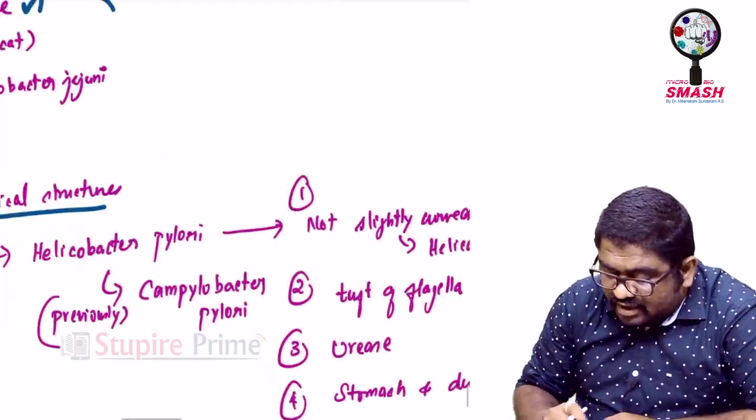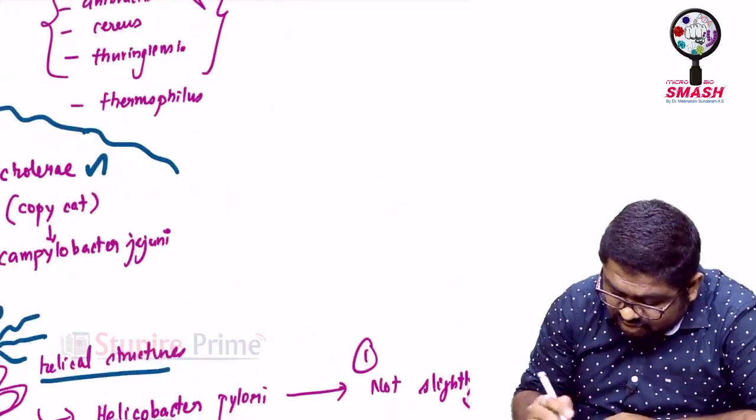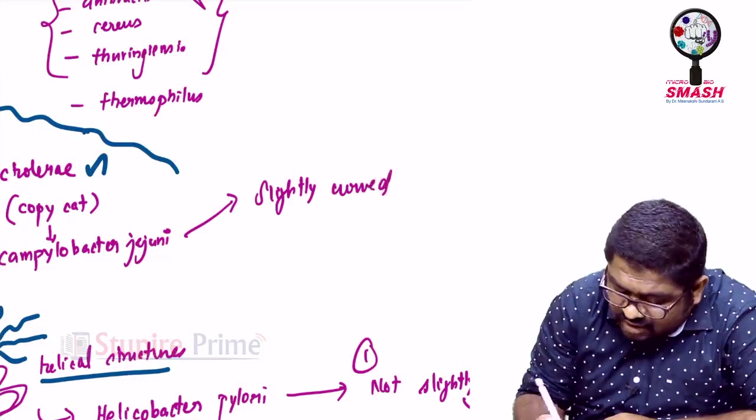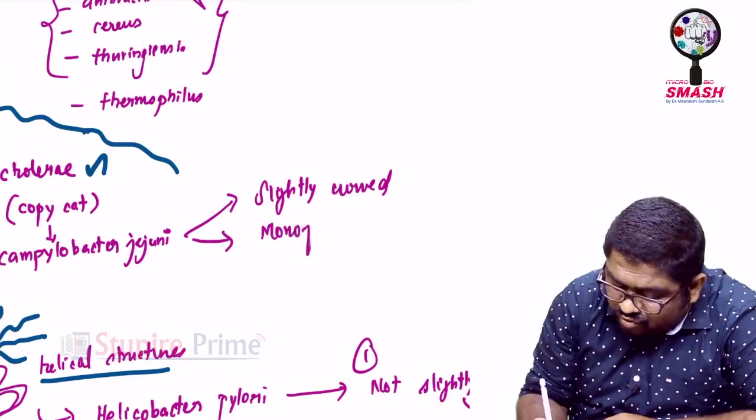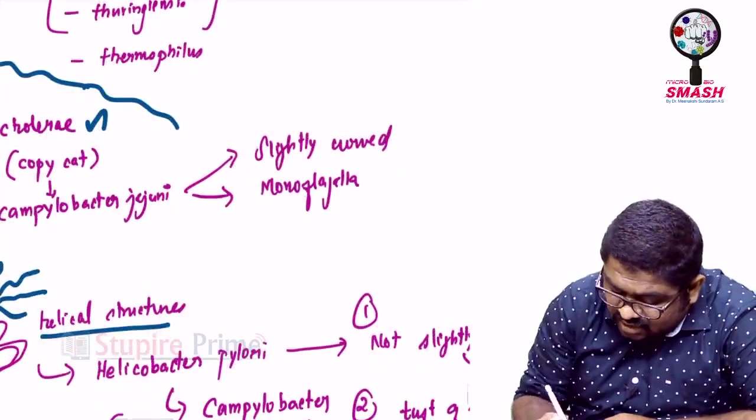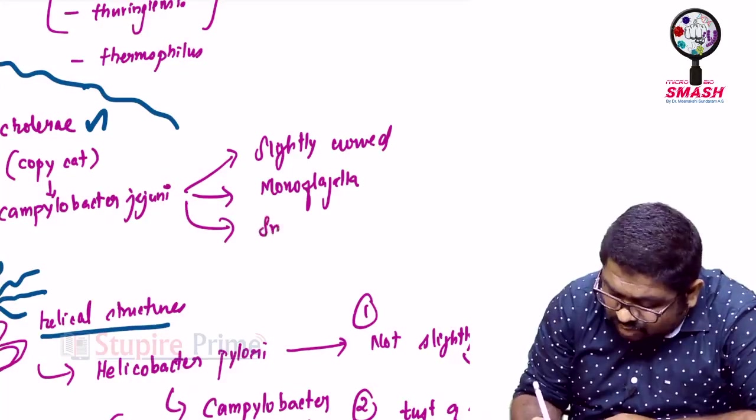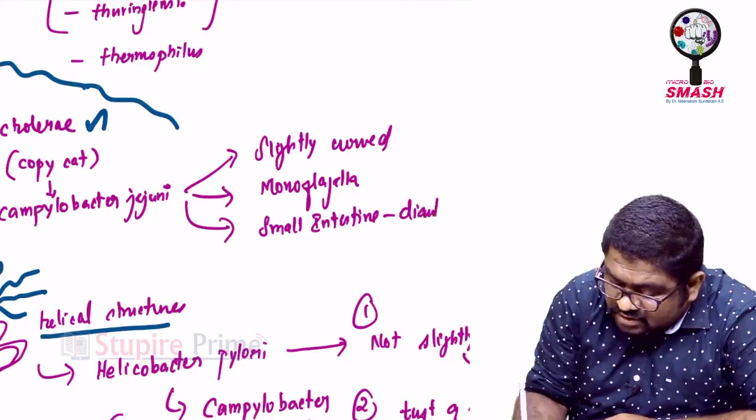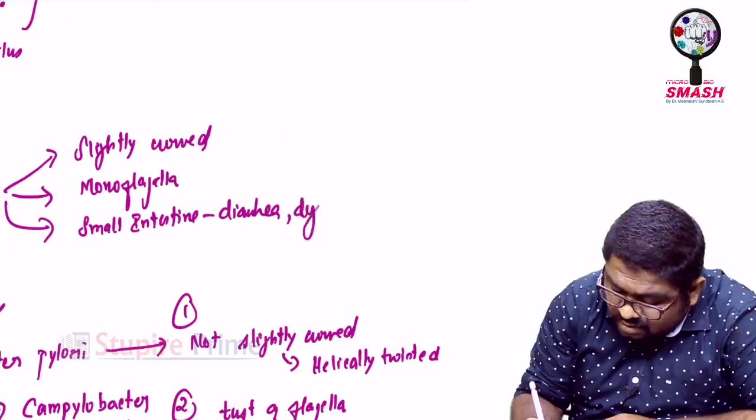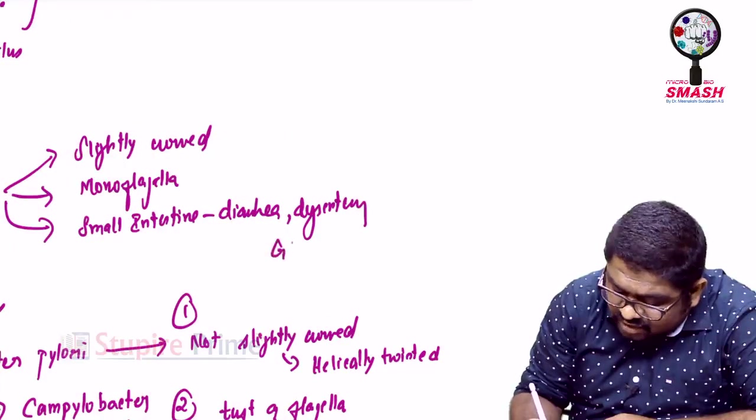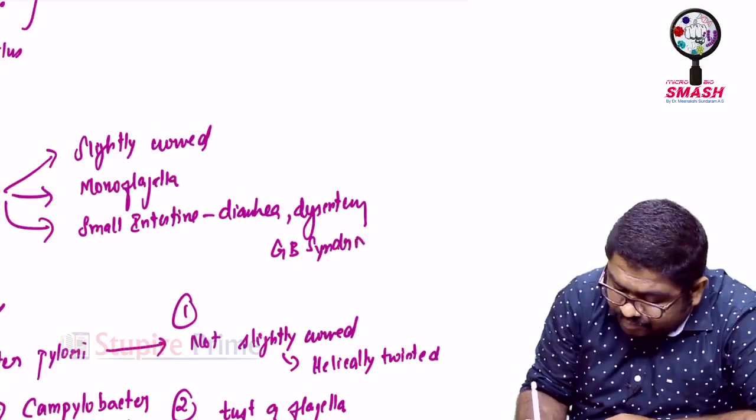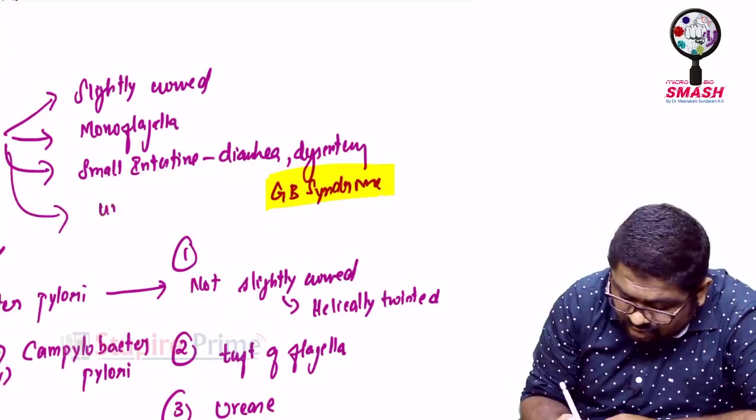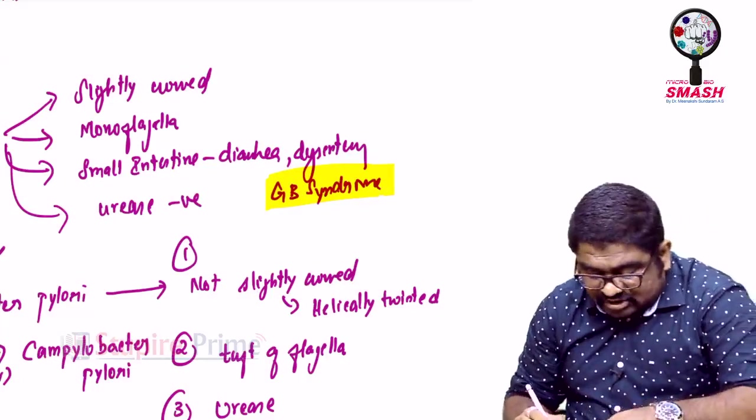And all these properties are different from that of what you learn about Campylobacter jejuni. This is slightly curved and not helical. It has a monoflagella, not a tuft of flagella. It is known to attack small intestine to cause diarrhea and not ulcers. It can cause diarrhea dysentery. It can even cause Guillain-Barre syndrome. None of these can be caused by Helicobacter pylori. And most of all, it will not be urease negative in most of the situations.